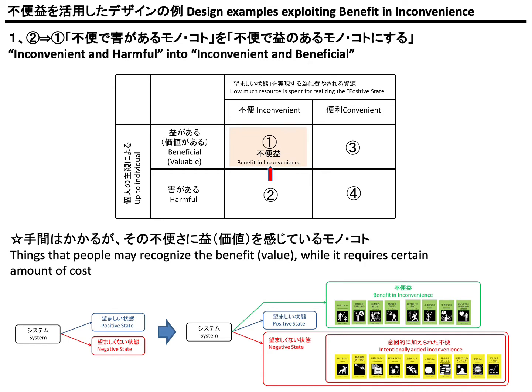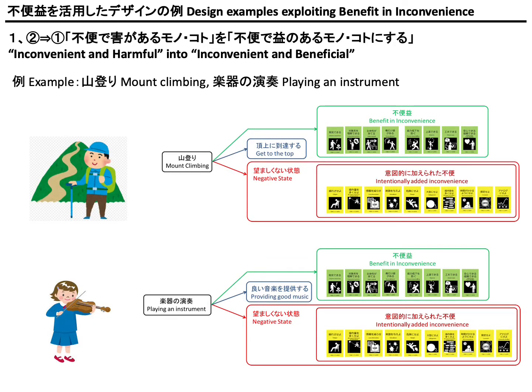Then, try to find benefit in inconvenience caused by the intentionally added inconvenience that has not been clearly noticed so far. Let me introduce the example of mountain climbing and playing an instrument. As for mountain climbing, although people may say that the objective is to get to the top of the mountain, some people could recognize benefits obtained through the process of mountain climbing. You should notice these benefits include the essences of benefit in inconvenience.